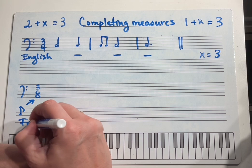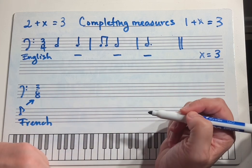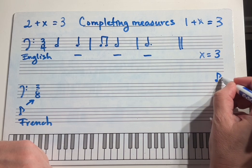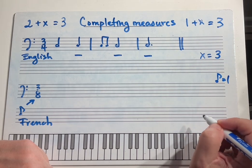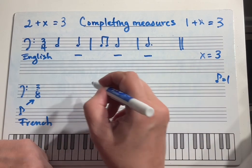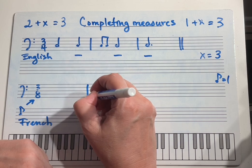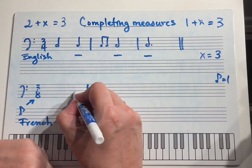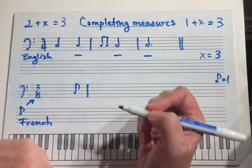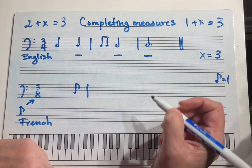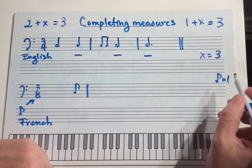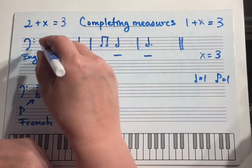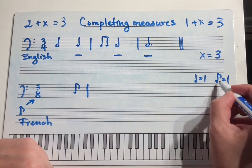So let's say quarter notes equal one beat — that's English. And then eighth notes are now going to be one beat; that's the 8 at the bottom. That's like translating into another language — this is like learning French. And now we have to count eighth notes as one beat.